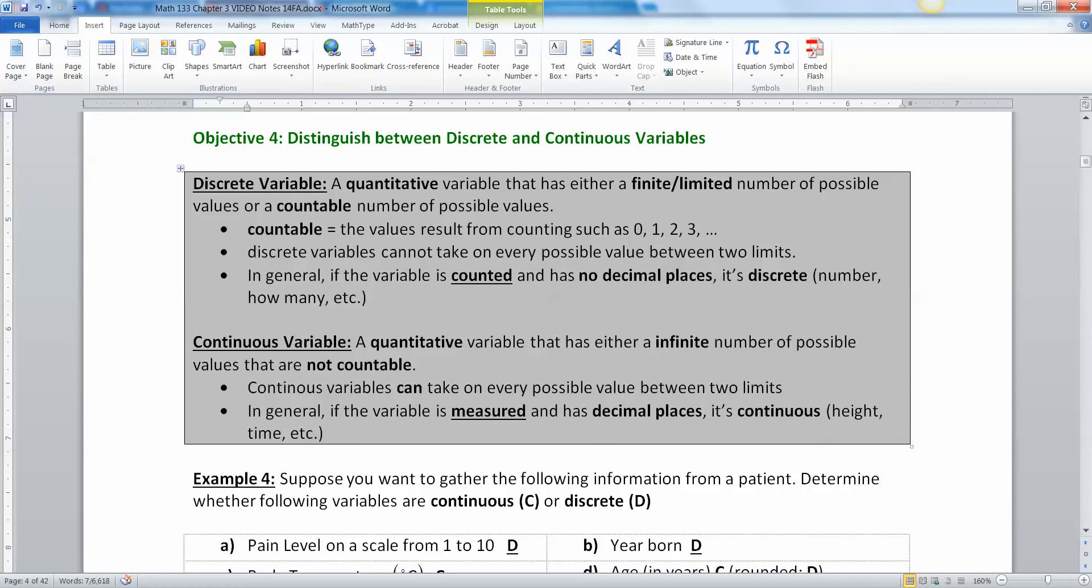Then we have quantitative being so important that we split it up two ways into discrete and continuous. And again, the reason for this is because we can do different things with discrete variables versus continuous variables. Discrete variables are counted or countable. They can be infinite, but you have to be able to count one, two, three, four.